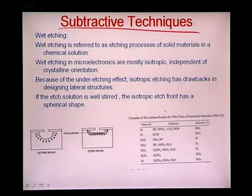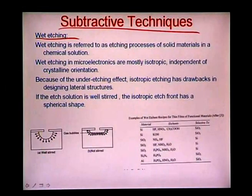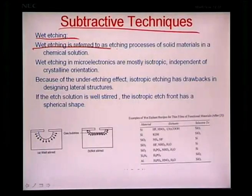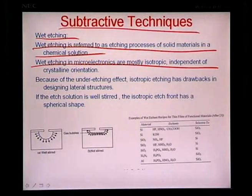The first bulk technique is wet etching — removing solid materials by dipping in a chemical solution that reacts and removes material. Wet etching in microelectronics is mostly isotropic and independent of crystalline orientation, using a homogeneous chemical reaction at the silicon surface. A potential pitfall is under-etching: because it is a homogeneous process, etching occurs equally in all directions, so the region under the mask also gets etched, making the overall etch shape larger than the etch window.